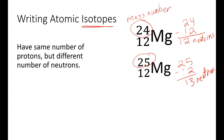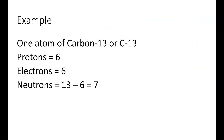Individual atoms of a particular element can have different numbers of neutrons, giving them different mass numbers. If we look at another example, carbon-13: the atomic number is 6, so it's got 6 protons and 6 electrons. 13 minus 6 gives us 7 for the number of neutrons. This 13 would have to be given to you. Notice this is another way of writing that isotope — we can write it as carbon-13 or C13.